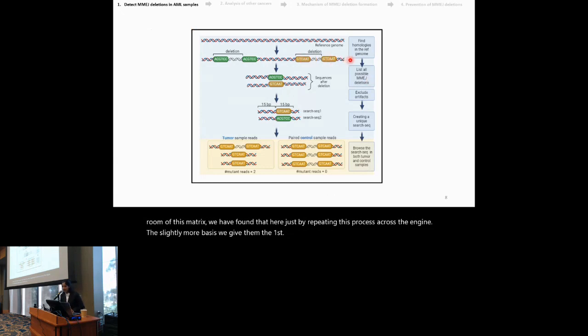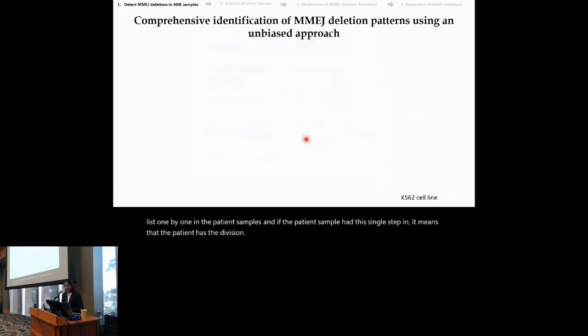Now that we have a list of all the possible homologies across the exome, we have a list of all the possible MMG deletions that can be created from this list. Now, what we do is, we search for this list one by one in the patient samples, and if a patient sample has this sequence present in the reads, it means that patient has that deletion.